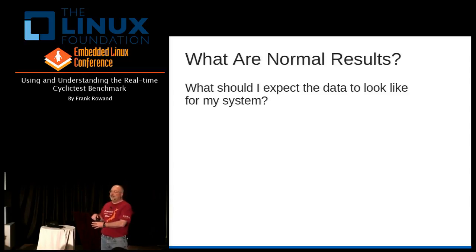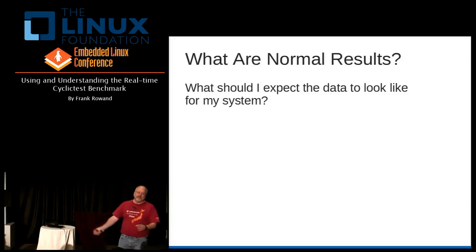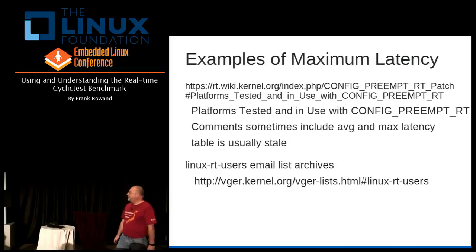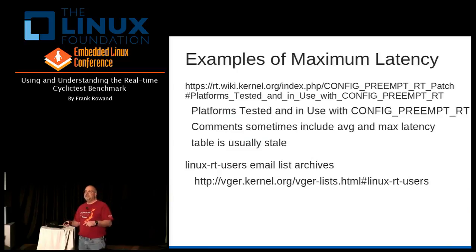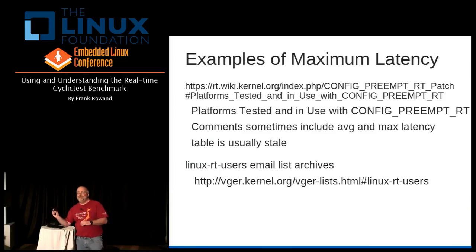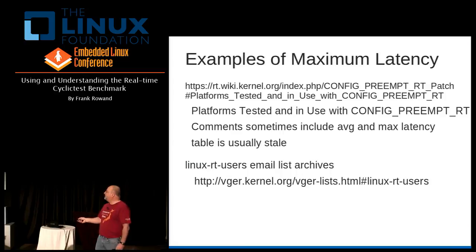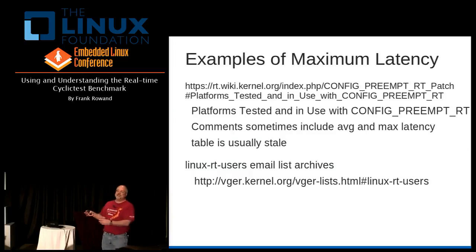I'm going to show a lot of information about what is a normal result or not a normal result. So I have my MIPS three-way, three CPUs with four levels of cache and 64 megabytes of memory running my XYZ application. What should my cyclic test result look like on that system? I have no idea, to tell you the truth. But there's a really great source: the real-time wiki actually has a table of people who've measured various machines, and sometimes in the comments section they'll say what was their average latency or maximum latency. If you go to the Linux RT users email list, people are quite often saying, I got a cyclic test result of X — is this expected, is this good, is this bad? So you can mine that list for the last few years and see what other people are getting.